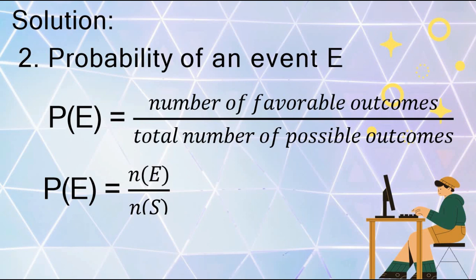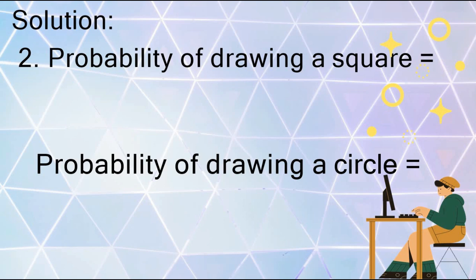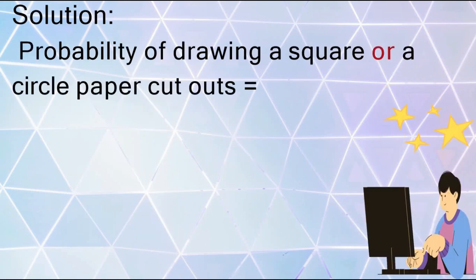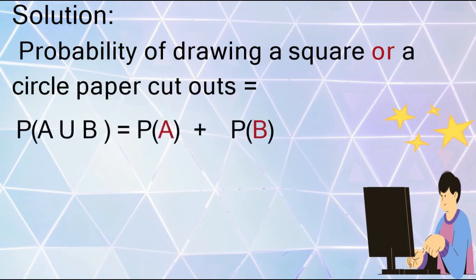The probability of drawing a square, P(A), is equal to 14 over 35, since we have 14 squares out of 35 paper cutouts. The probability of drawing a circle, P(B), is equal to 8 over 35, since we have 8 circle paper cutouts out of 35. Since this is a mutually exclusive event because they don't have common outcomes, we will use the formula P(A∪B) = P(A) + P(B) to find the probability of drawing a square or circle.